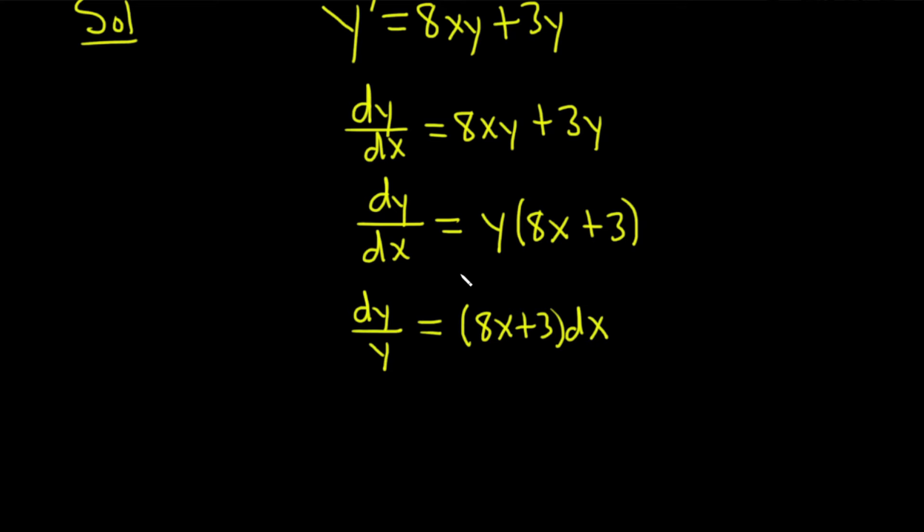And the goal is achieved. We have y's on one side together with a dy, and there's no x's. It's just pure y's. And then x's on the right-hand side with a dx. Now we integrate both sides.